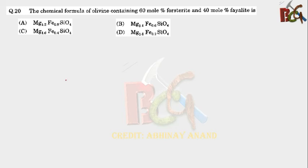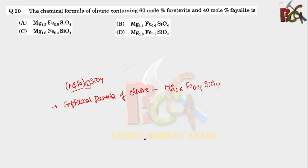So what is the formula of olivine? Mg Fe2 SiO4. So this whole unit should be 2. And when we look at the empirical formula of olivine, it is Mg1.6 Fe0.4 SiO4. So this is the empirical formula of olivine. But in question we have forsterite is 60 and fayalite is 40%. So basically olivine is a series whose end members are forsterite and fayalite. Forsterite is Mg rich, fayalite is Fe rich.